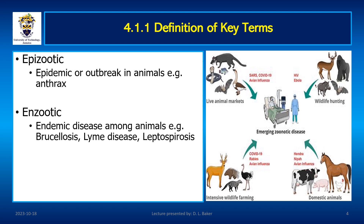Enzootic diseases, on the other hand, are prevalent in specific animal populations. While these diseases may not directly affect humans, they can act as reservoirs leading to zoonotic infections. Diseases like brucellosis, Lyme disease, and leptospirosis fall into this category.